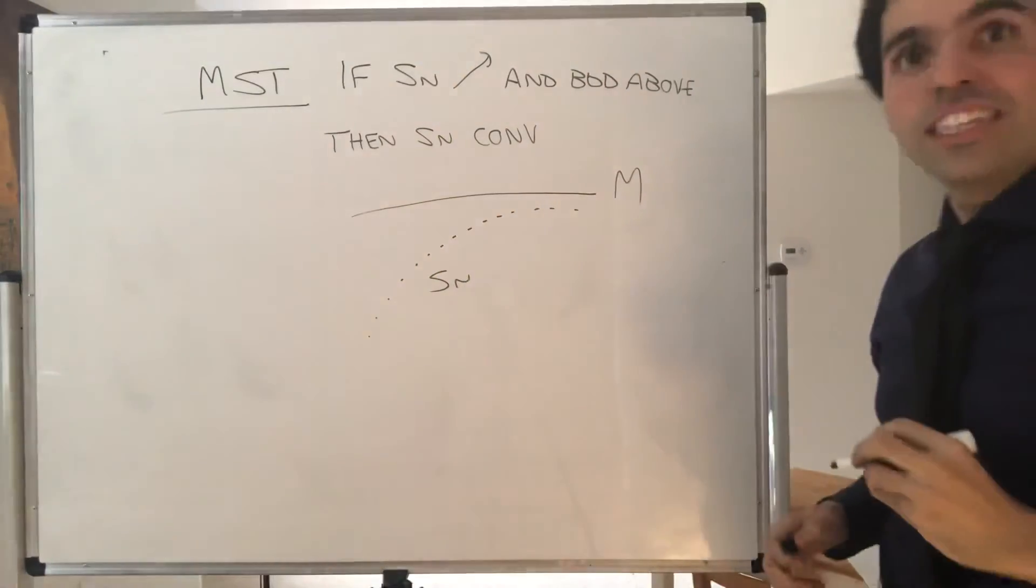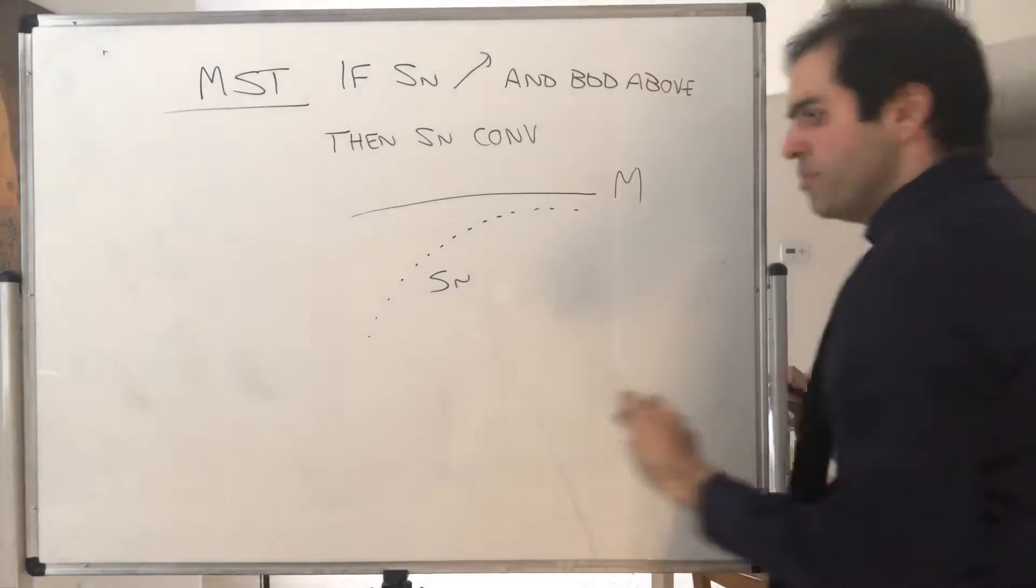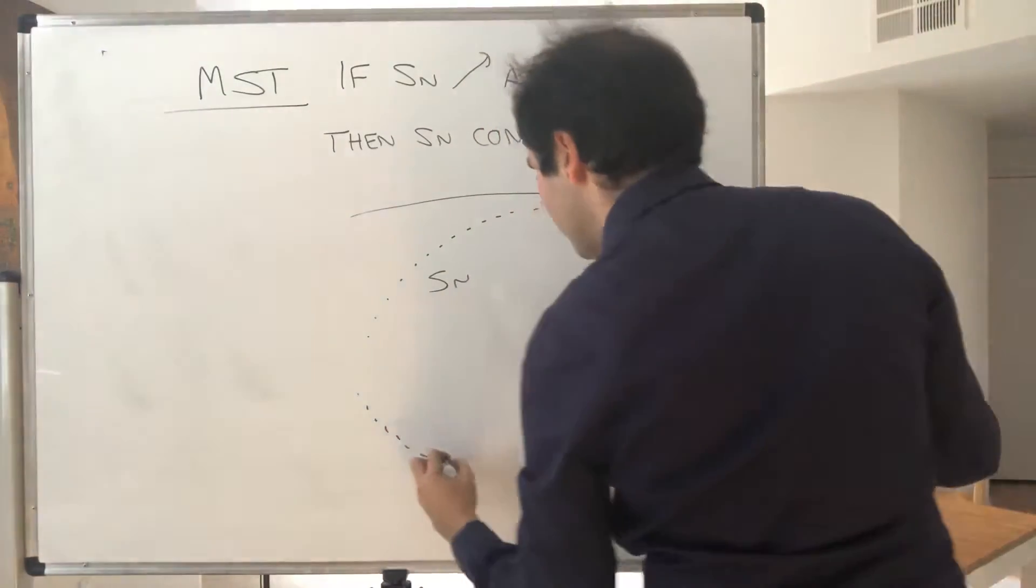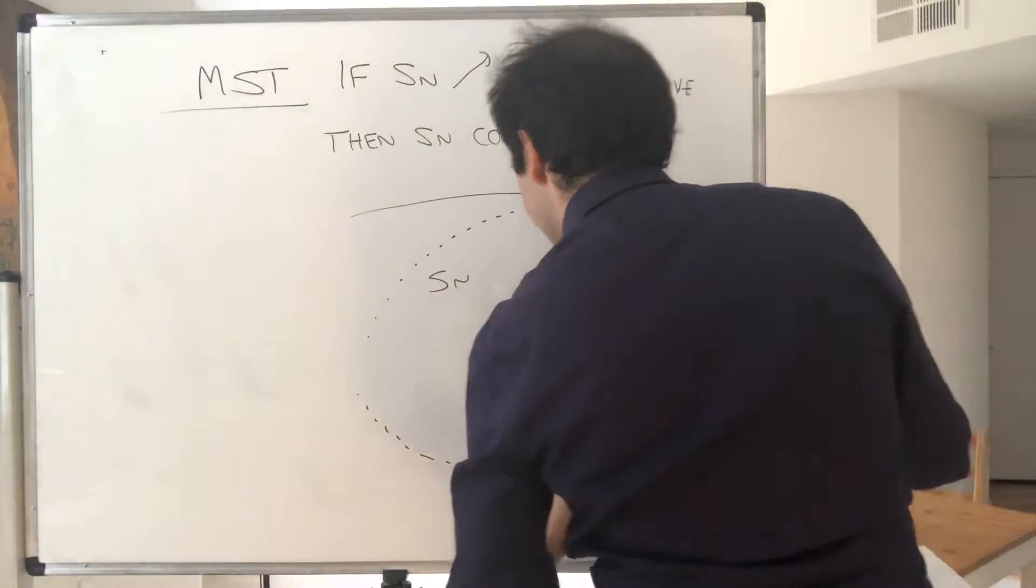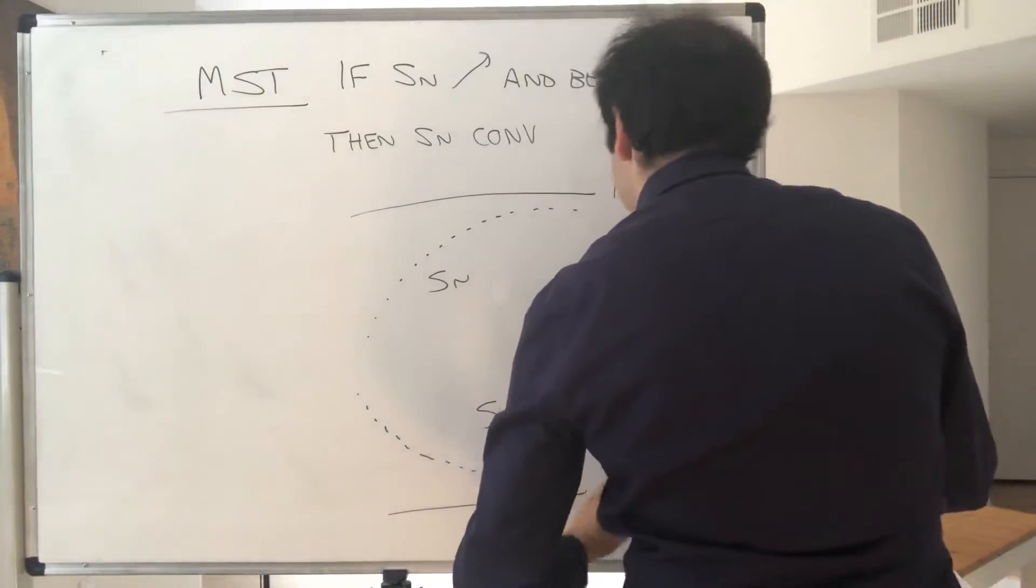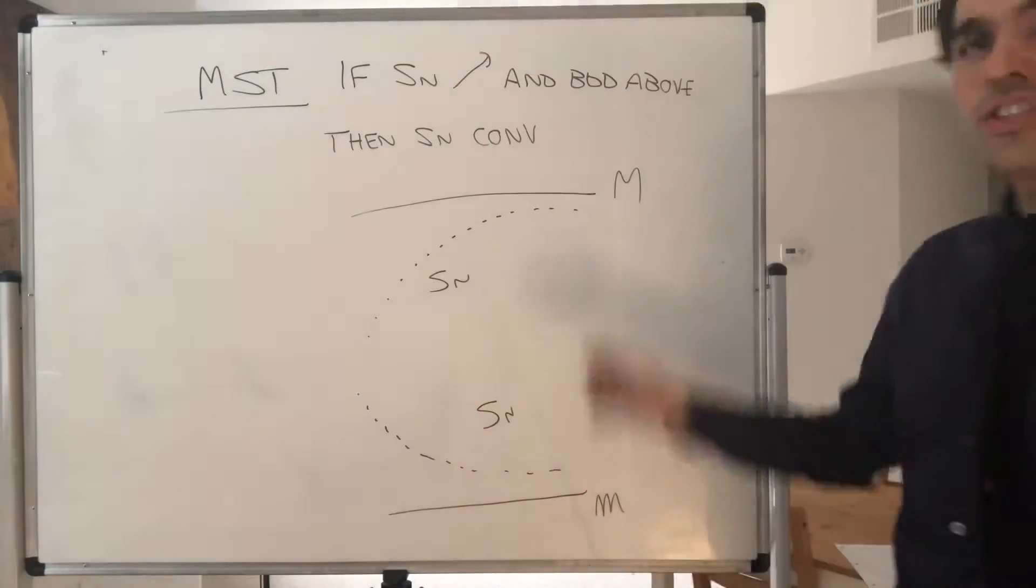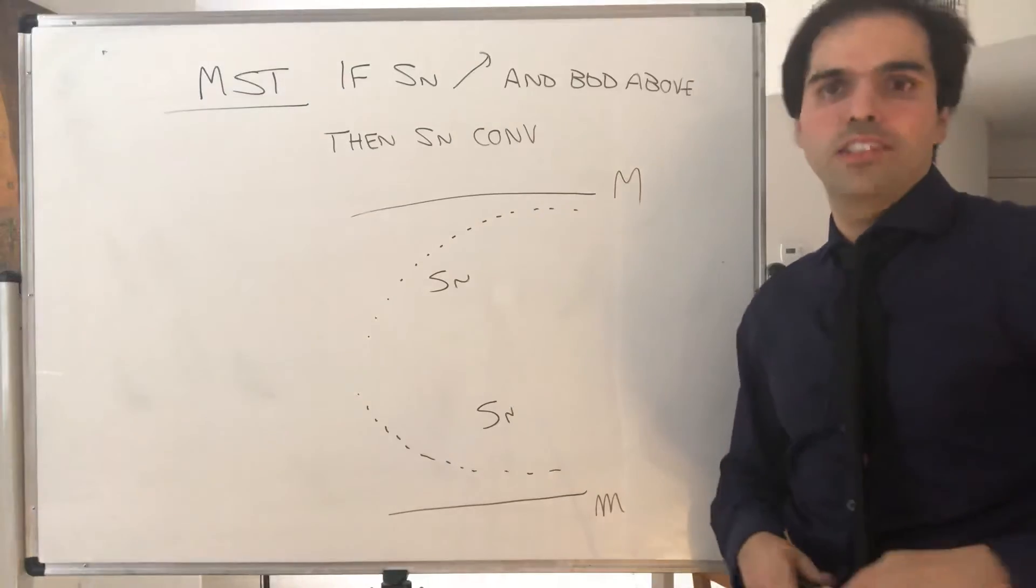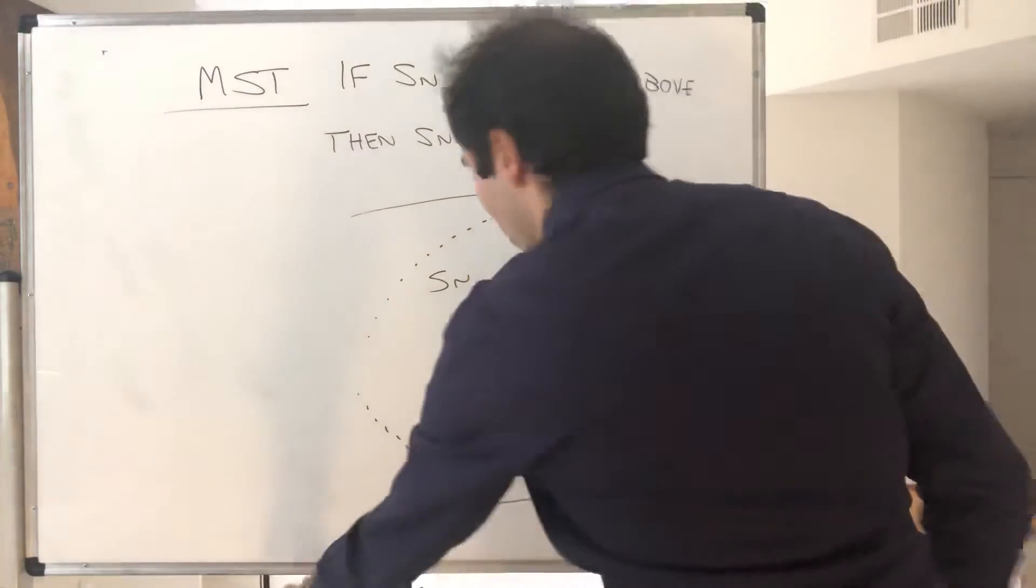And similarly, if Sn is decreasing and has a ceiling from below, then it must also converge. Super easy way of showing convergence.